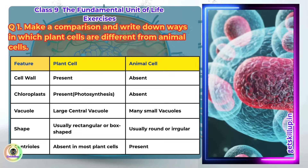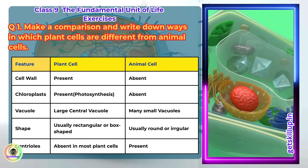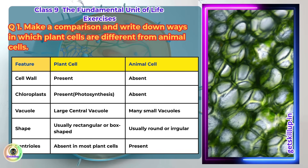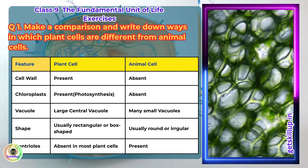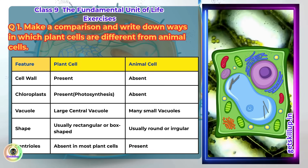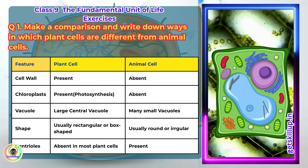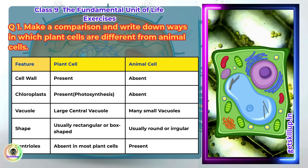Features of plant cell: Cell wall is present. Chloroplasts is present for photosynthesis. One large central vacuole. Usually rectangular or boxed shape. Centrioles is absent in most plant cells.